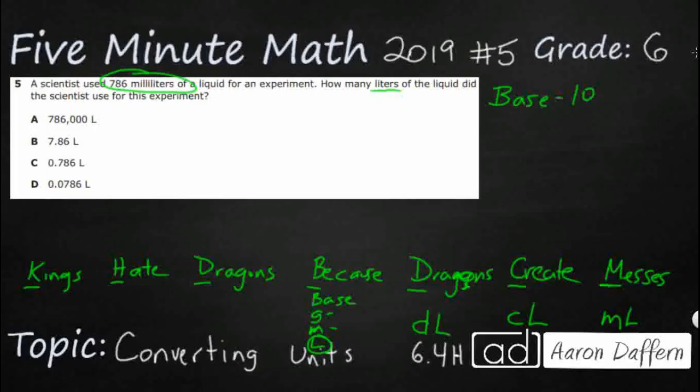Going to the left, we have decaliters, and that is DA because we already have a D for deci, then hectoliters, and then kiloliters. We remember this: kings hate dragons because dragons create messes. We use that to remember the first letter in each of these, and this gives us our units and prefixes.